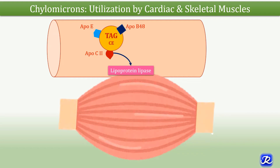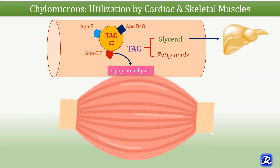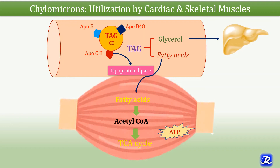Lipoprotein lipase causes hydrolysis of the triacylglycerol present in chylomicrons, breaking it down into glycerol and fatty acids. The glycerol goes to the liver, and fatty acids are taken up by muscle cells via fatty acid transporter protein and CD36. In muscle, fatty acids are utilized for energy, and some free fatty acids are also transported in the circulation bound to albumin.